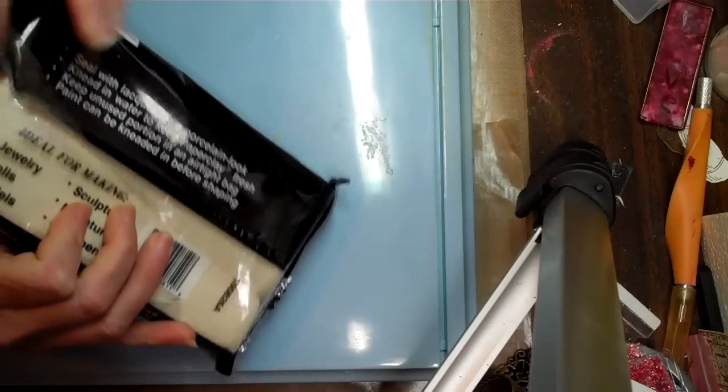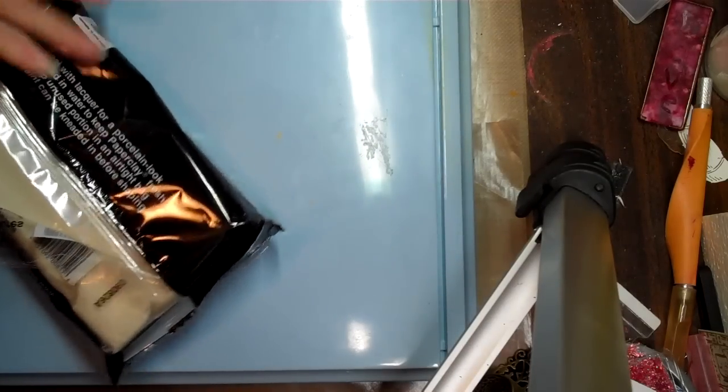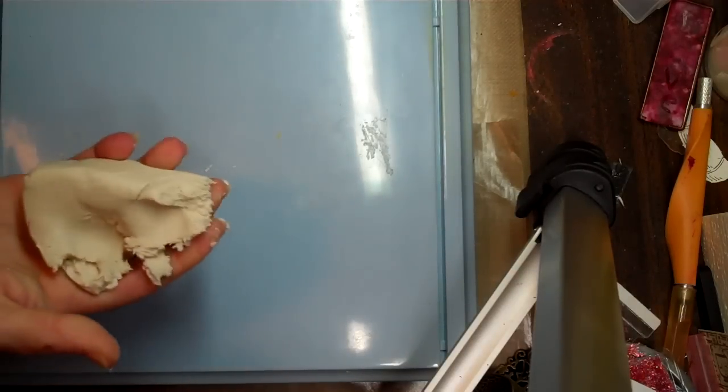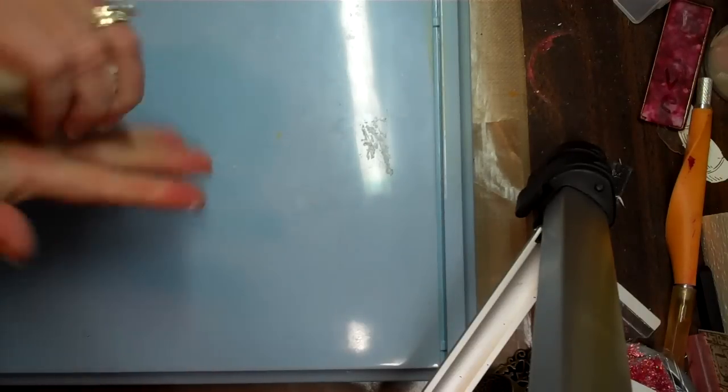Then you're going to open up your paper clay. You can get paper clay at Michael's and all those kind of places. Grab a pretty decent sized chunk. It can always be put back, whatever you don't use. And I knead it just a little bit just to get it going, get it flowing.